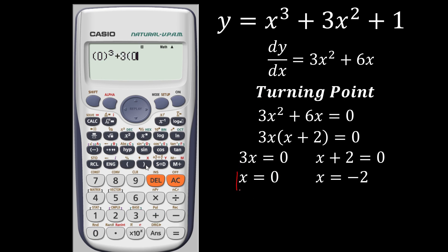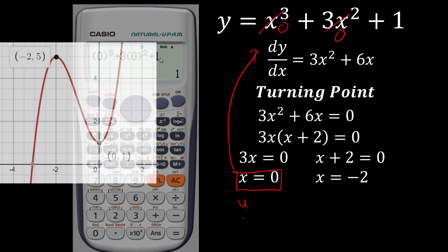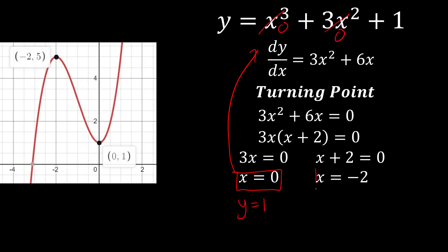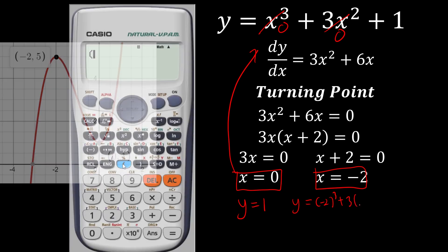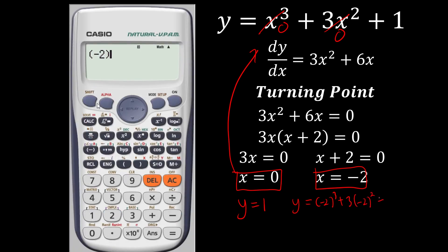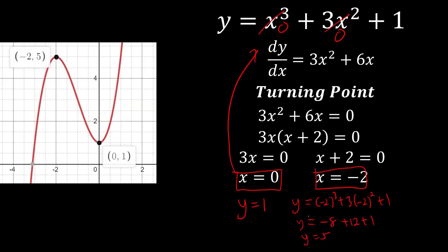To find the y-coordinates, we substitute our x values back into the equation. When x = 0, y = 1. When x = −2: (−2)³ + 3(−2)² + 1 = −8 + 12 + 1 = 5. So y = 5, as we can see in the diagram.